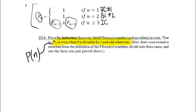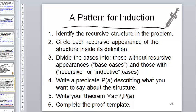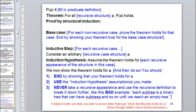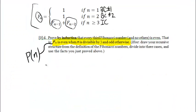We've got our predicate, and can state our theorem: our predicate is true for all positive integer values of n. Now we're ready for the proof template. We need a base case for each non-recursive case. There are two non-recursive cases in the Fibonacci definition — n equals 1 and n equals 2 — so we need two base cases.